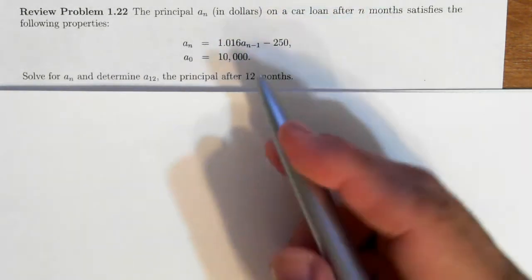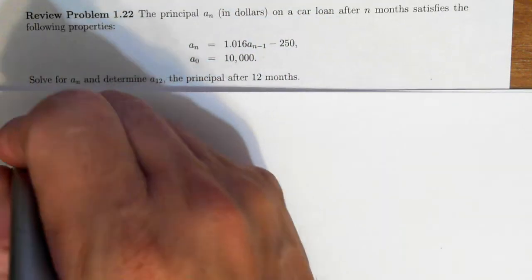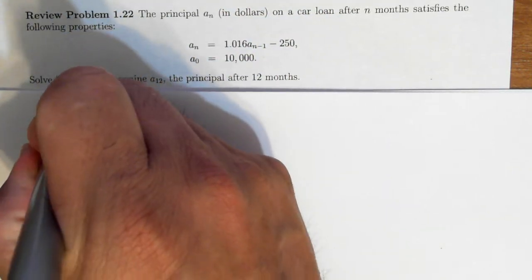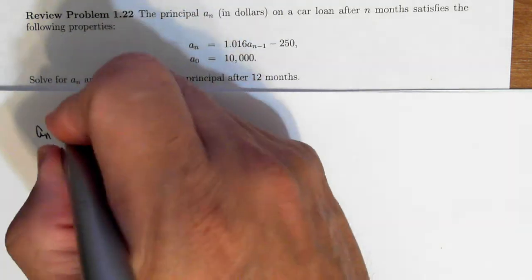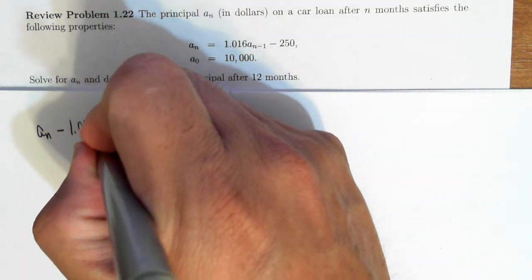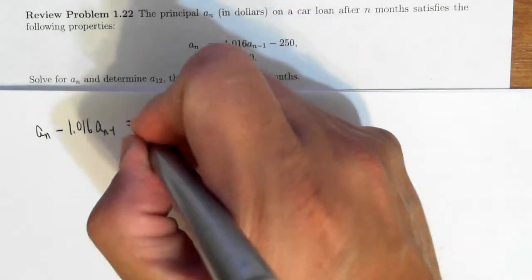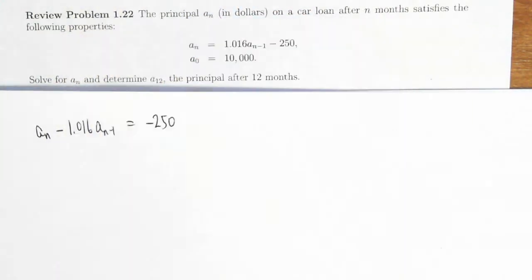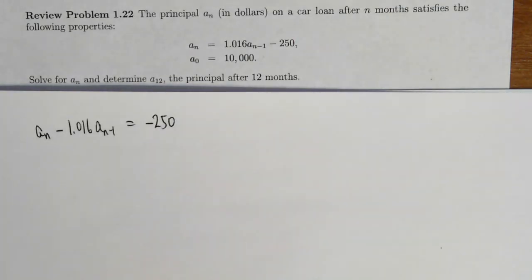Okay, so this is a linear recurrence relation, a_n minus 1.016 a_{n-1} equals negative 250. So that is the linear recurrence relation.